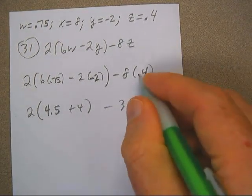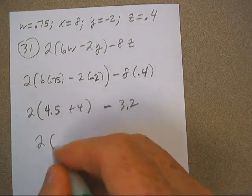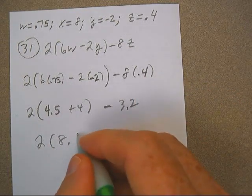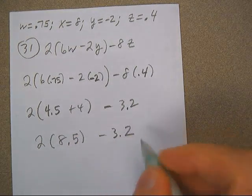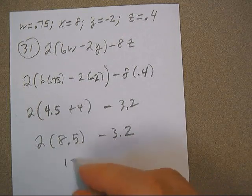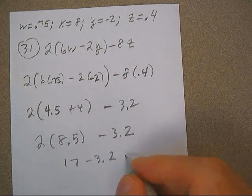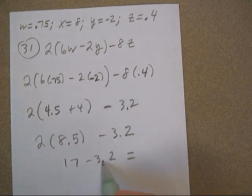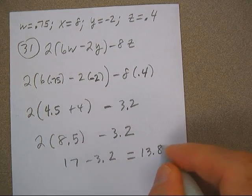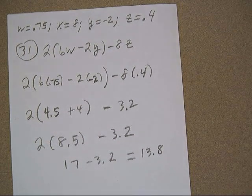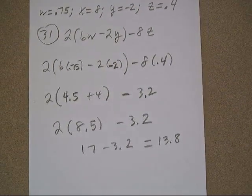With one decimal, I've got eight and a half minus three point two. Let's see, that's 10, this is going to be 17 minus three point two. 17 minus three is 14, go down a bit, we should get 13.8 on problem 31, and that is correct.